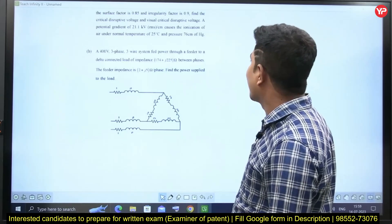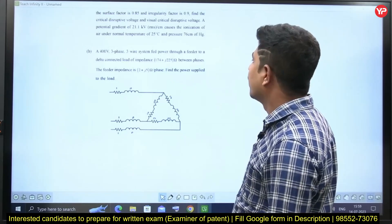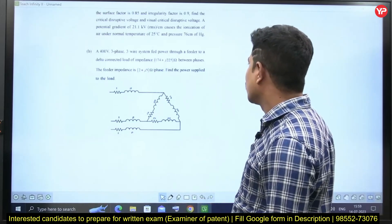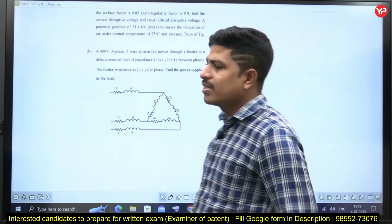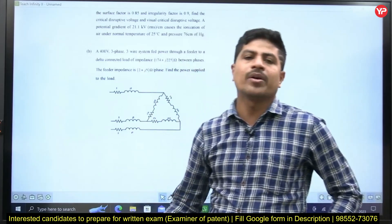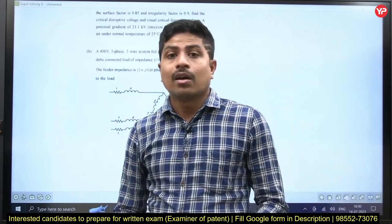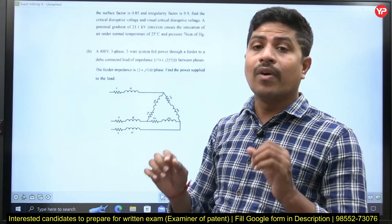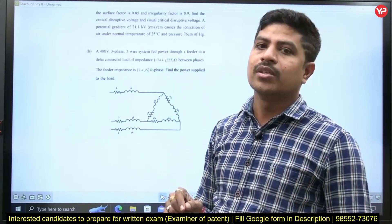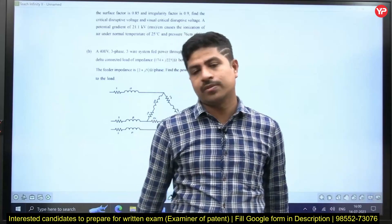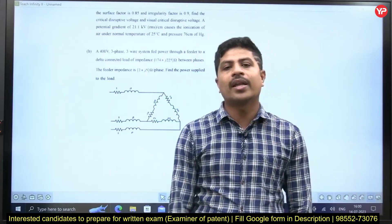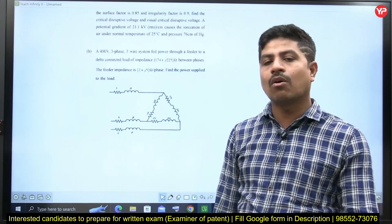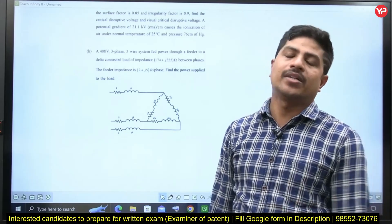A 400-volt three-phase three-wire system fed power through a feeder — this question can also be solved either from a power system or a network analysis point of view. Writing all necessary steps and diagrams with very good handwriting is very important. You get this only by practice — not in a single go. I suggest all of you to practice, practice, and practice.